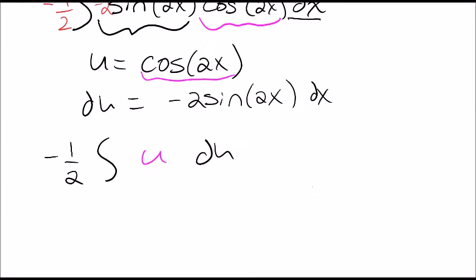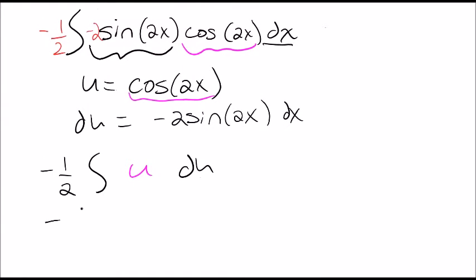Now we can integrate this normally. This becomes negative 1 half u squared over 2 plus c, which equals negative u squared over 4 plus c.